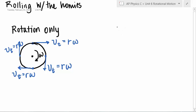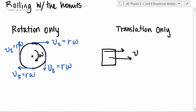Then there's translation only. And for a block, that might be really easy to imagine. So up until we started rotating things, you had a block and it was moving to the right. And it had a velocity v, which was the same as the velocity v of this point here, which was the same as the velocity v of this point here, or this point here. They all had the same velocity.